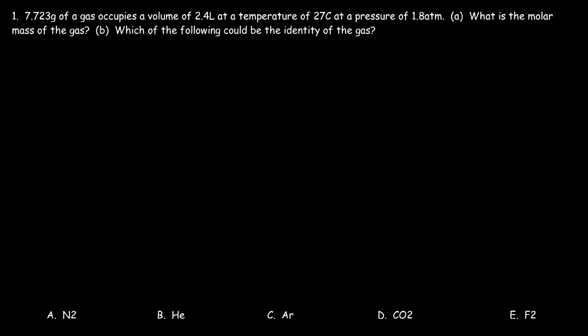7.723 grams of a gas occupies a volume of 2.4 liters at a temperature of 27°C at a pressure of 1.8 atm. What is the molar mass of the gas?